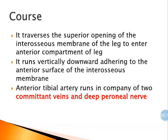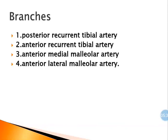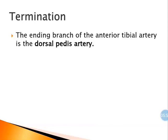The anterior tibial artery then runs vertically downwards, adhering to the anterior surface of the interosseous membrane. It runs in company with two comitant veins and the deep peroneal nerve. The branches of the anterior tibial artery are: posterior recurrent tibial, anterior recurrent tibial, anterior medial malleolar, and anterior lateral malleolar. Its terminal branch is called the dorsalis pedis artery.